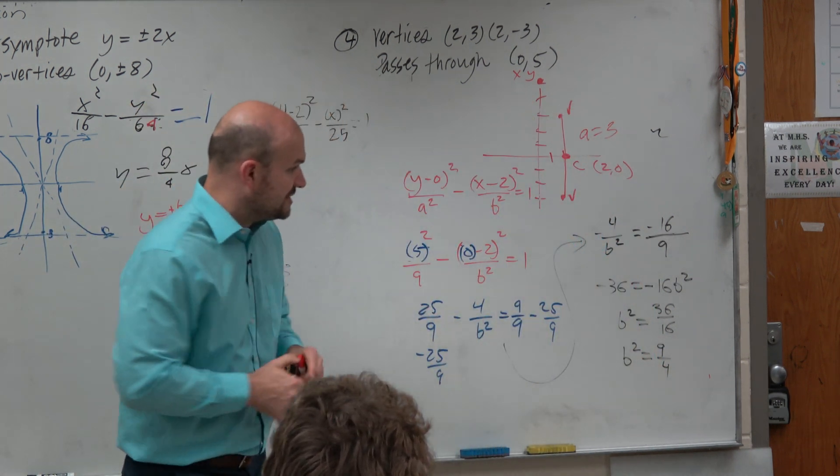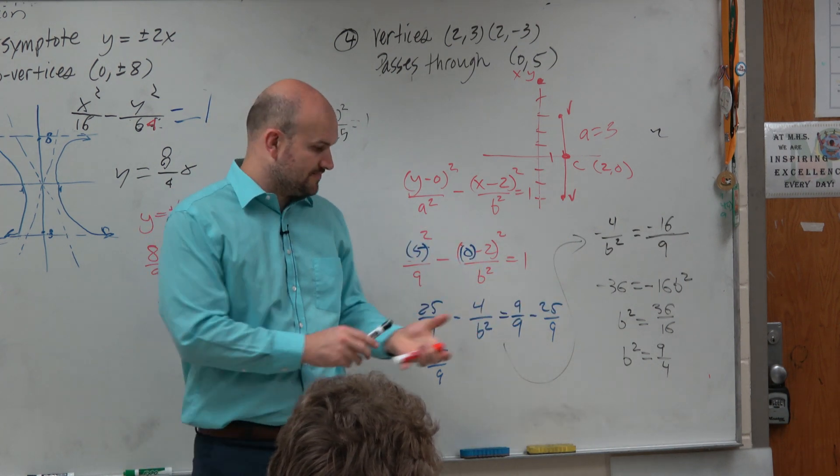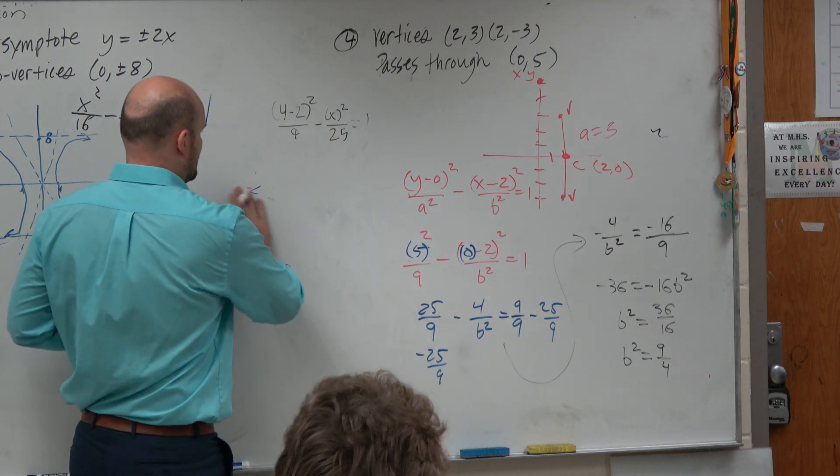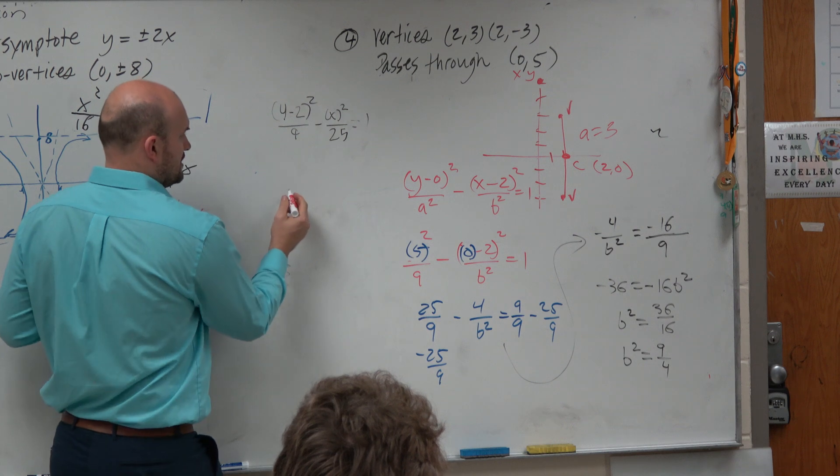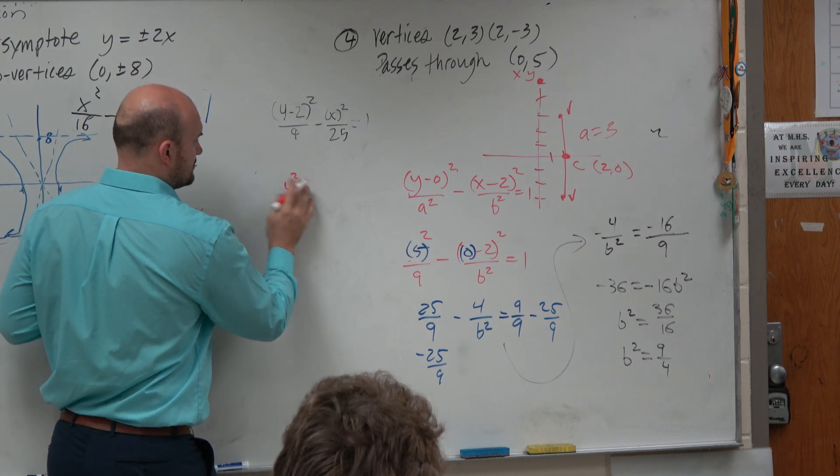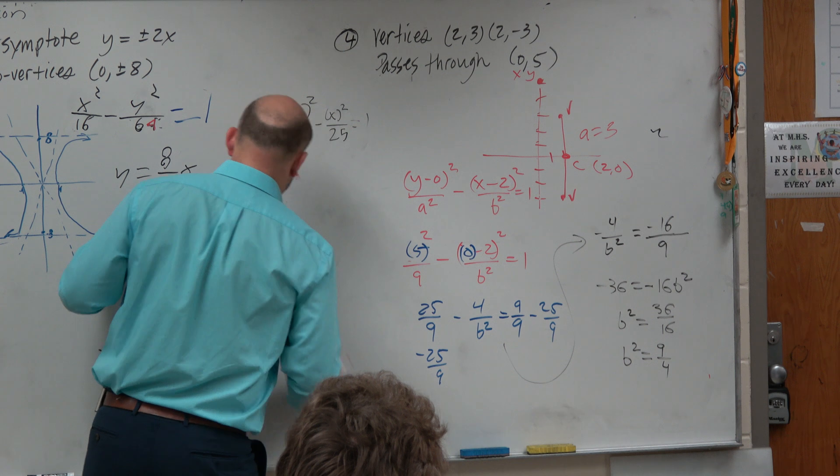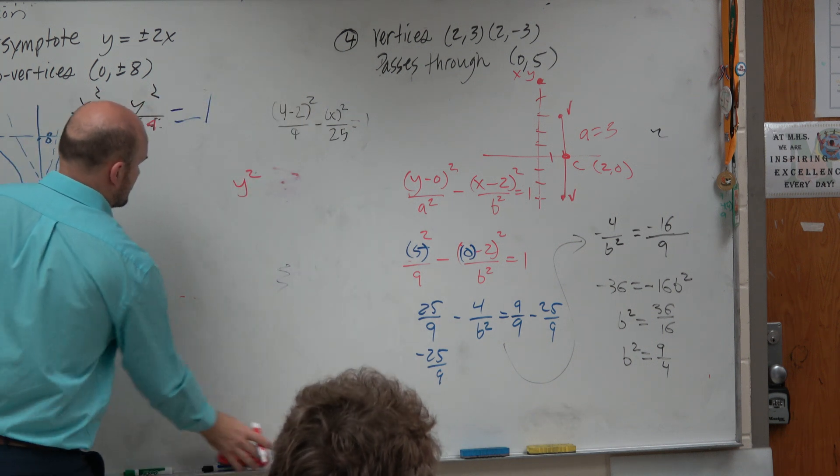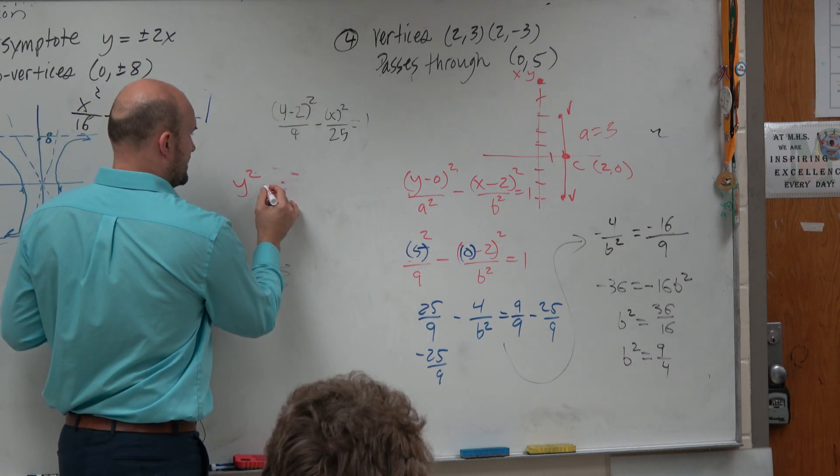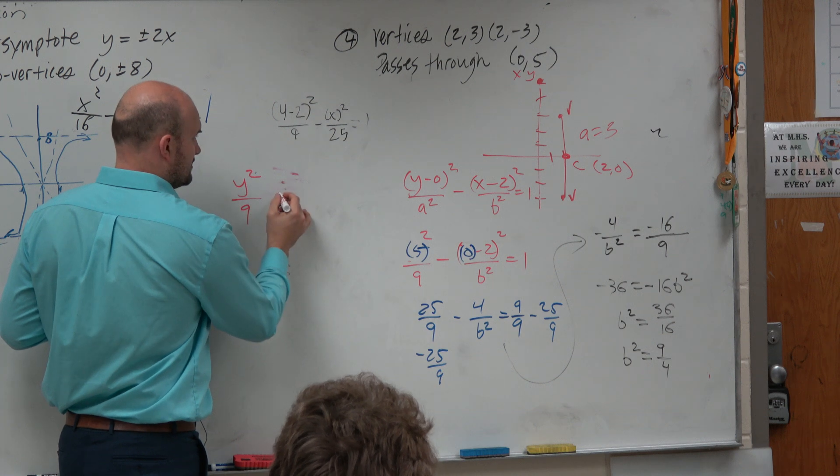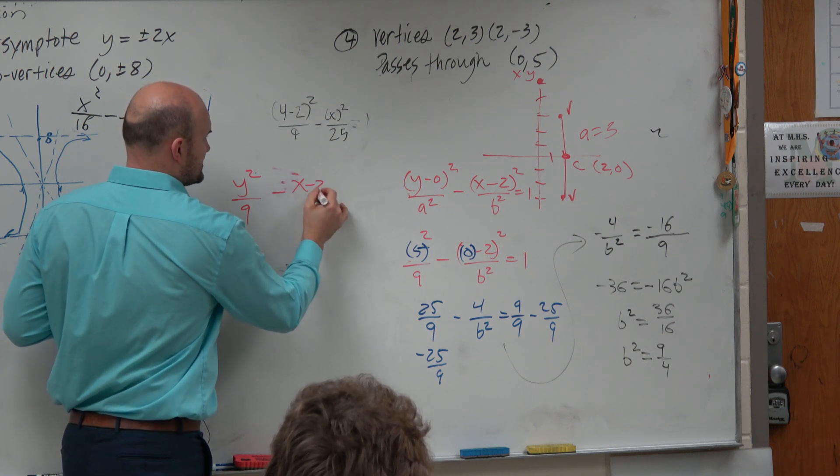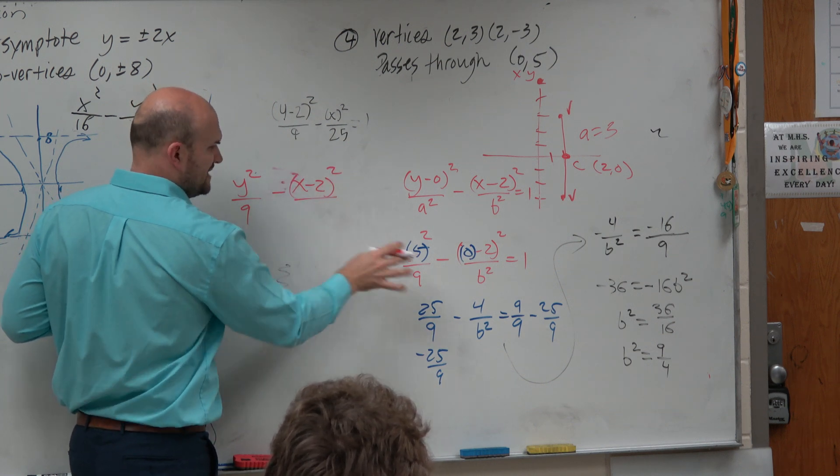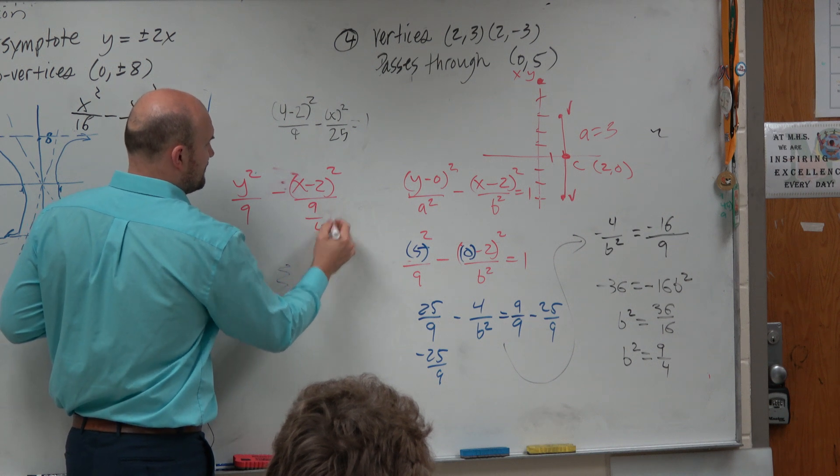Now, again, guys, to write my equation, I'm just concerned about what b squared is. So I'm going to rewrite the equation over here because I think I have enough space. So therefore, this is really y squared over 9. We already knew that. minus x minus 2 squared over b squared, which is 9 fourths equals 1.